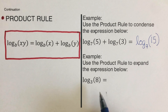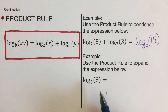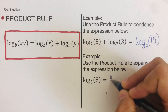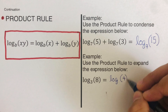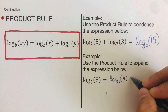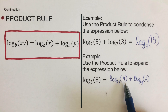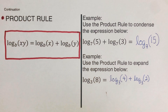Now going the other way: if we have log of eight to the base three, we can expand this into two logs. We can rewrite it as log of four to the base three plus log of two to the base three, because four times two gives us eight.